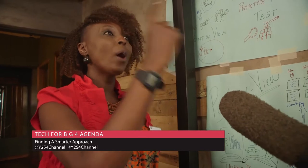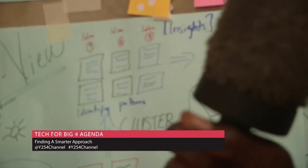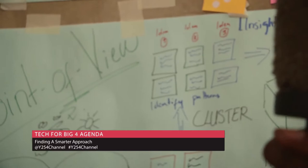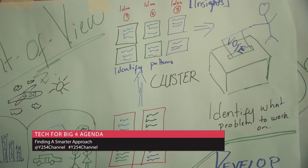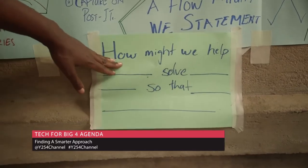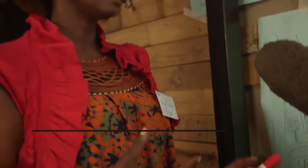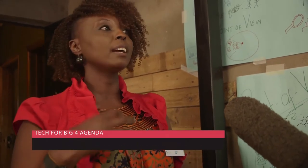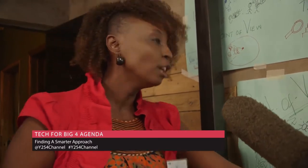Then your team will vote for one problem they would like to solve — democracy applies everywhere. After that, you develop a 'how might we' statement. For example: 'How might we, team Shudja, help team Tunapanda solve the problem of ensuring more experiential learning in a sustainable environment, so that we can have students transforming the world?'